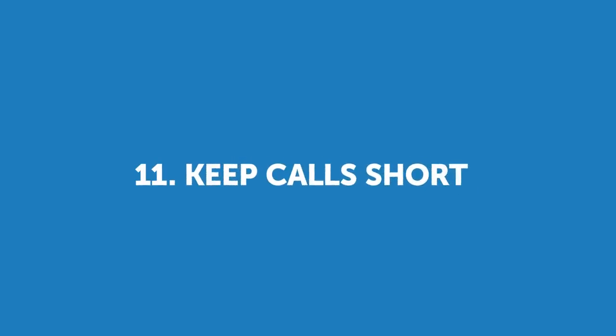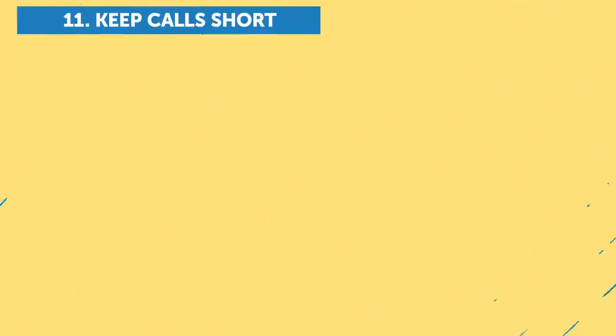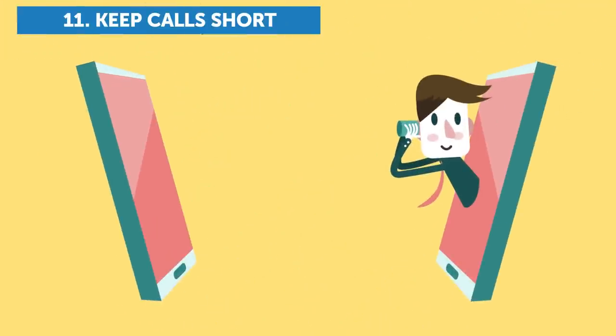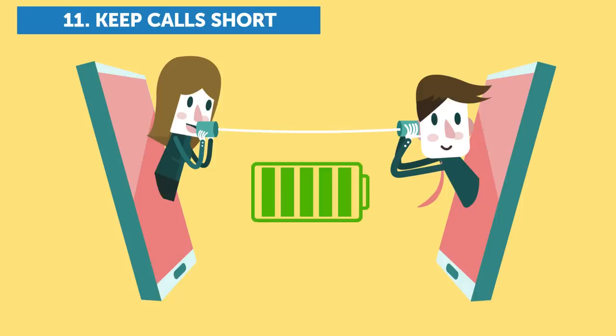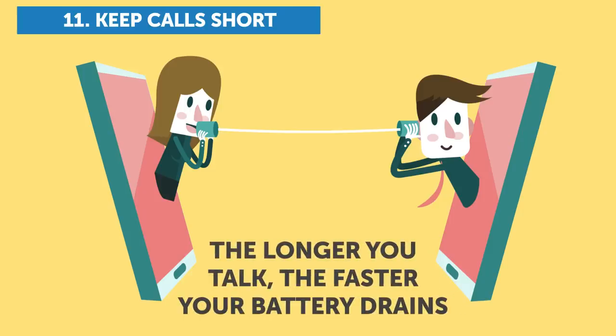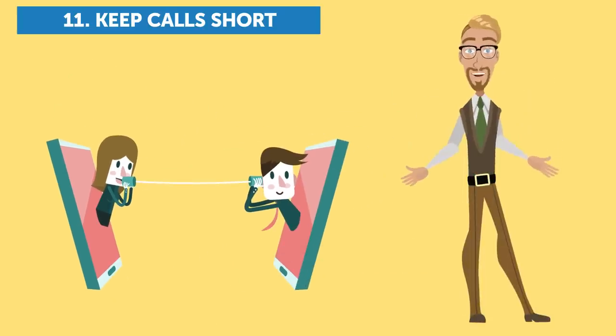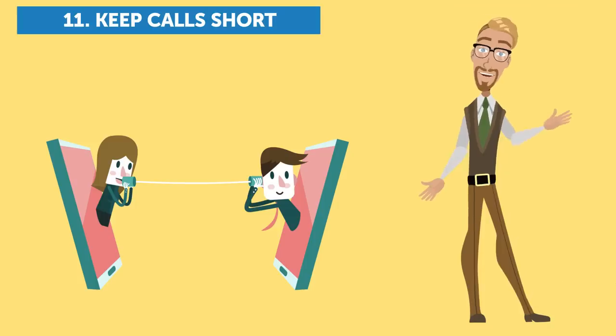11. Keep Calls Short. A dying battery is one of the most used white lies out there when we want to end a boring conversation on the phone. But even if your battery is fine at the moment and you're chatting up a storm with your best friend, the longer you talk, the faster your battery drains. So keep it short if you don't want your phone to go black on you.